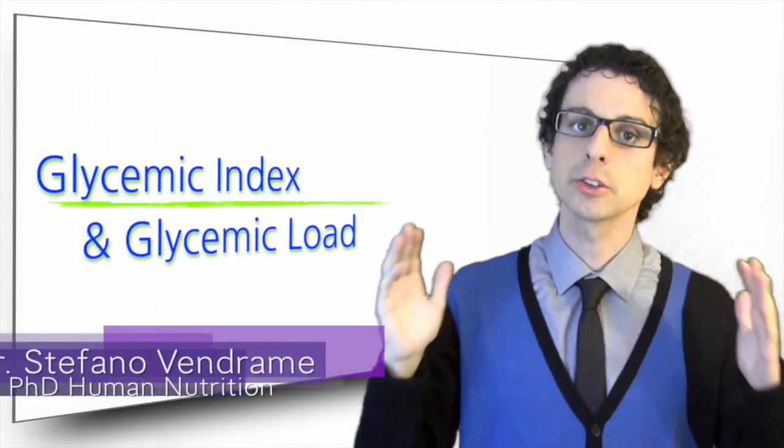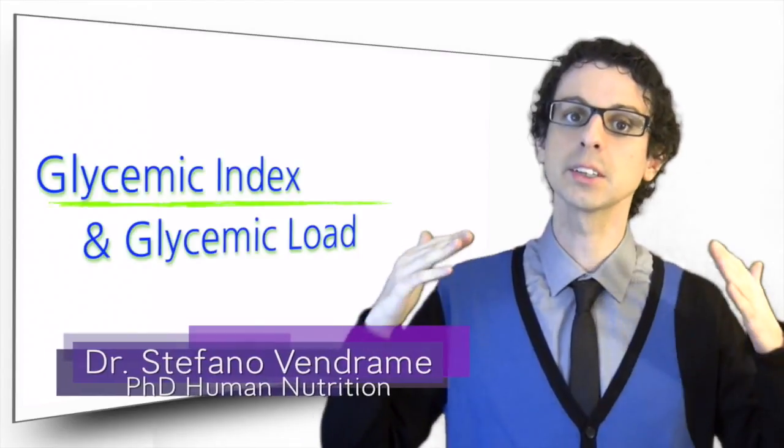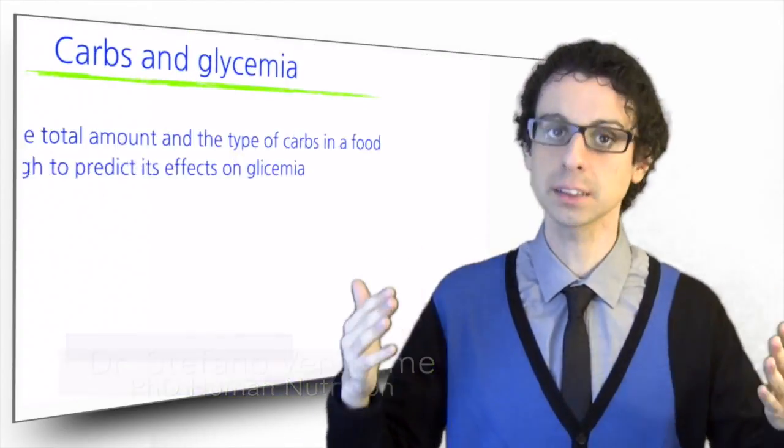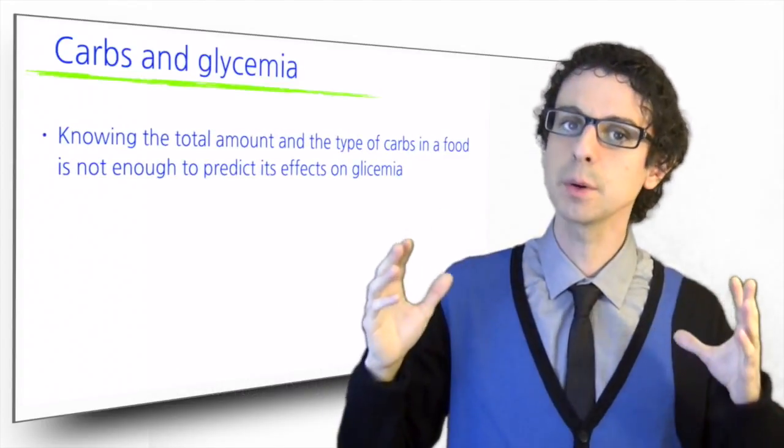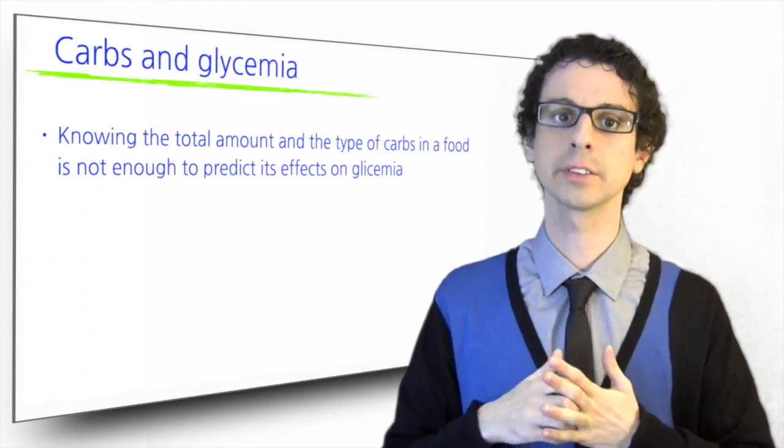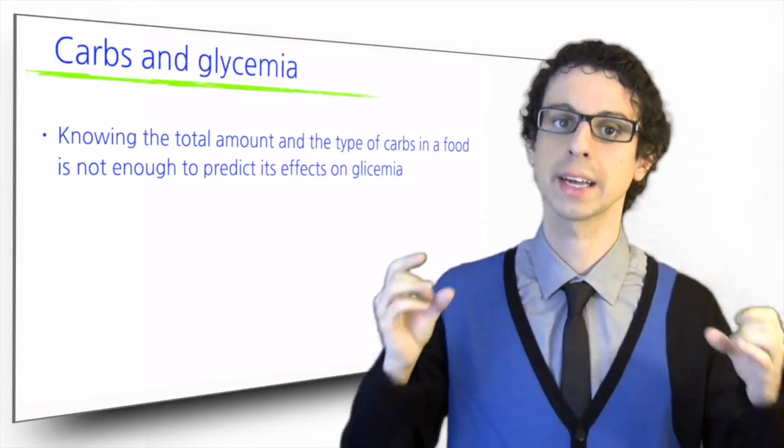In the late 70s, Dr. David Jenkins of the University of Toronto realized that knowing the total amount of carbs in foods was not enough to predict the effects of these sugars on blood glucose fluctuations. Knowing the type of carbs contained in a food, simple sugars or complex carbohydrates, provided some clues but was far from sufficient to make a correct prediction.